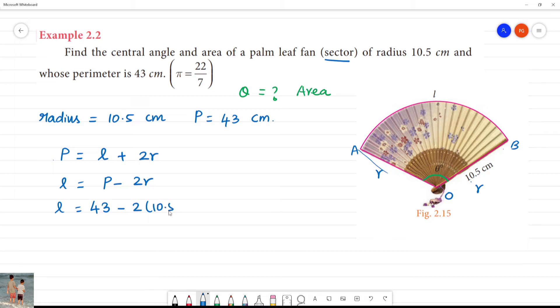Length is equal to 43 cm minus 2 times 10.5. 10.5 times 2 is 21. 43 minus 21 equals 22. Length of the arc is equal to 22 cm.